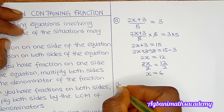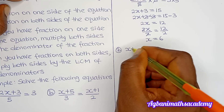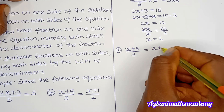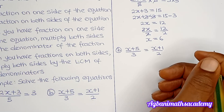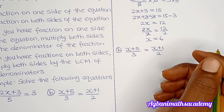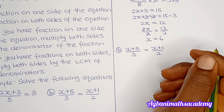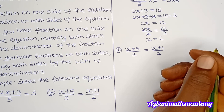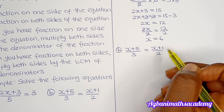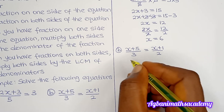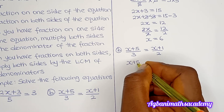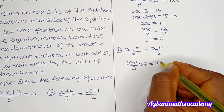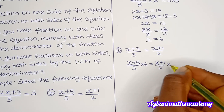For question B, we have (x + 5) / 3 = (x + 1) / 2. We can see fractions on both sides, so we multiply both sides by the LCM of 3 and 2, which is 6. This gives us (x + 5) / 3 × 6 = (x + 1) / 2 × 6.